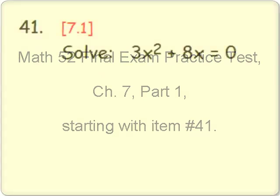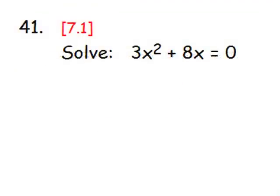Let's move on to Chapter 7, number 41. Notice that this equation we have to solve has an x squared. That means we must do some factoring to find the solution and make sure that the whole quantity factored is equal to 0, which in this case it already is.